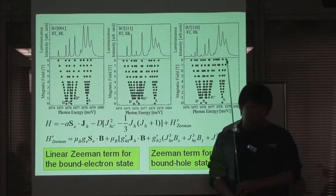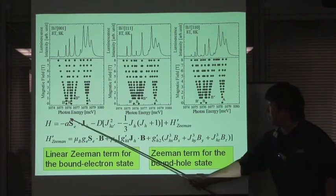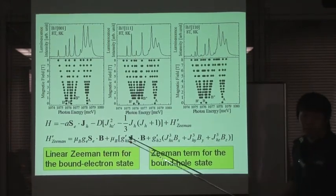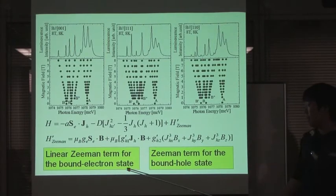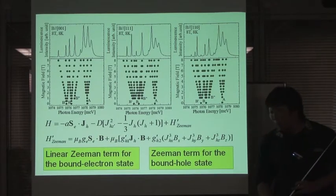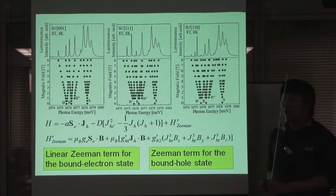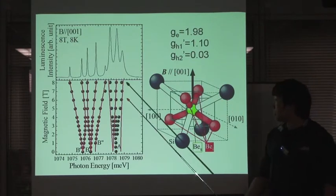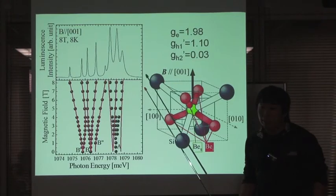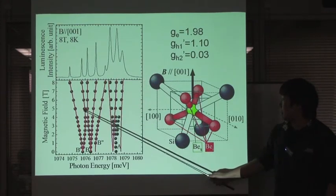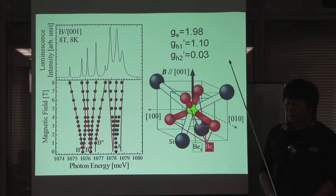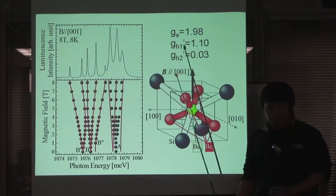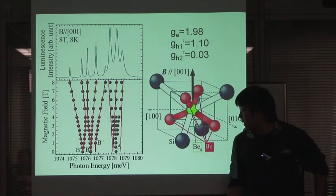If it was assumed that the barium pair was oriented in the 001 axis according to previous work, the 111 magnetic field should have led to the simplest Zeeman pattern. But our experimental results show that the 001 magnetic field causes the simplest Zeeman pattern. So we conclude that a barium pair in silicon has a 111 axis of symmetry. For confirming the barium pair structure quantitatively, we use this Hamiltonian. This part is used for the non-magnetic-field spectrum, and this part means the effect of the magnetic field — the first term is the linear Zeeman term for the bound electron state, and the other term means the Zeeman term for the bound hole state. Assuming the barium pair has a 111 axis of symmetry, we fit the experimental data using this Hamiltonian. This consistent fitting shows the validity of our assumption.